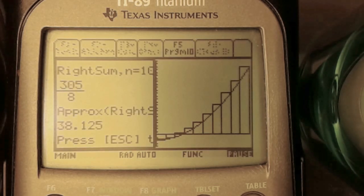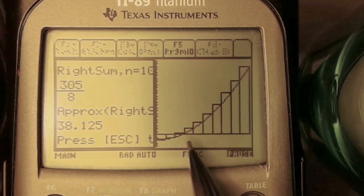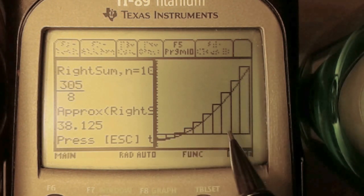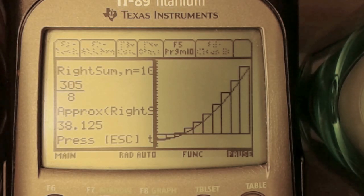We get an approximation of 38.125 using a right Riemann sum, which is a lot more than the left Riemann sum. We know this is an overestimate because the rectangles are above the function line. This will be more than the actual area under the curve.